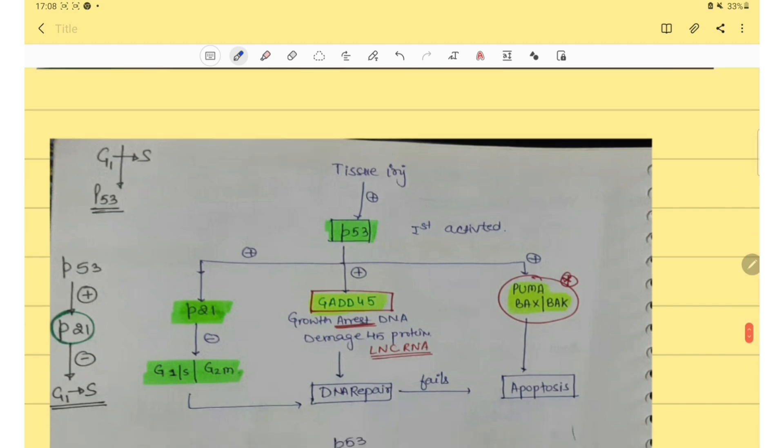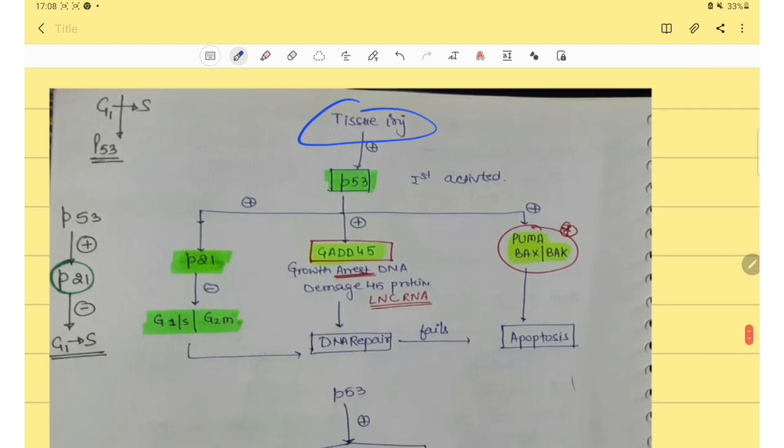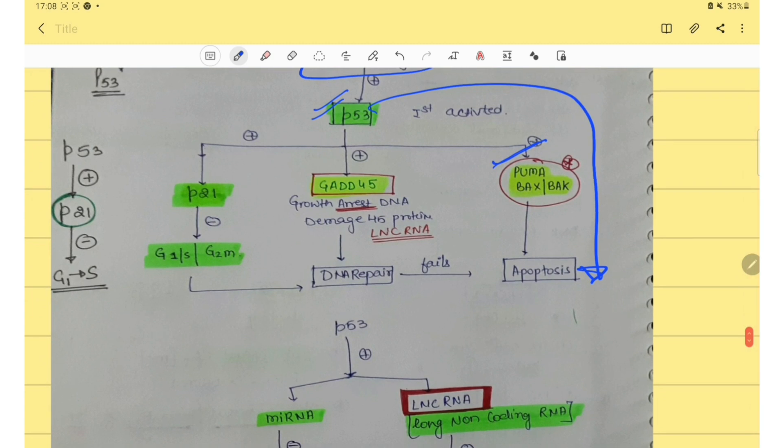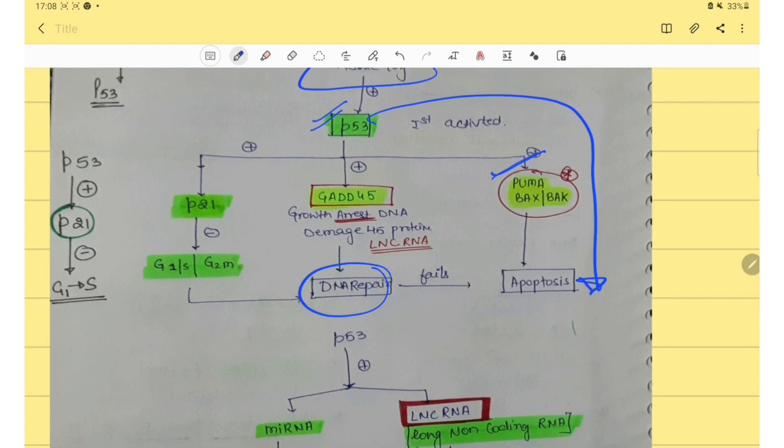Then P53. In P53 if there is DNA injury, it activates the P53. So there is apoptosis. Then it will activate the PUMA pro-apoptotic gene. And for DNA repair, P53 activates the GADD45. This is very important.